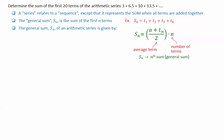Here, Sn is the general sum, a is the first term, Tn is the nth term, and n is the term number.